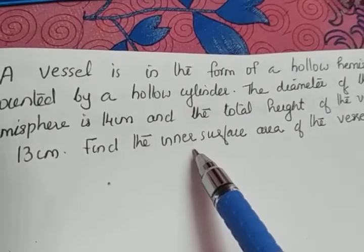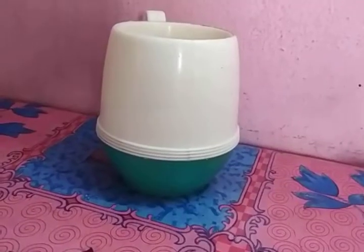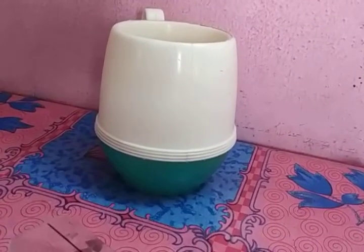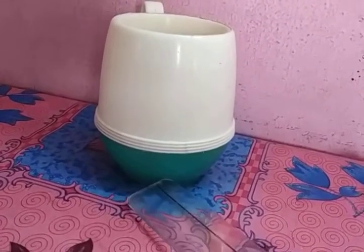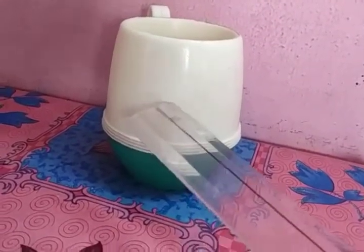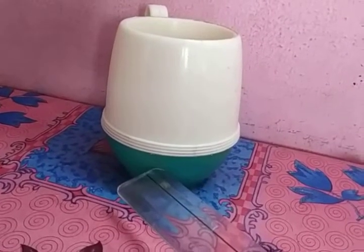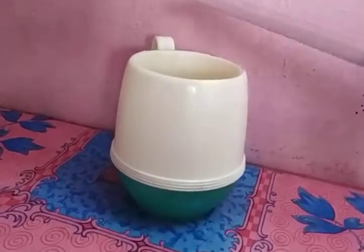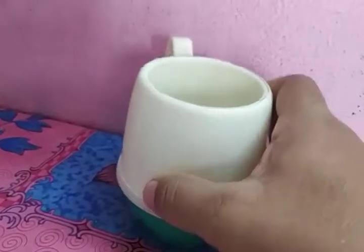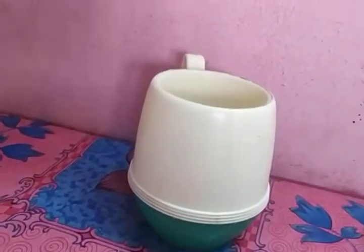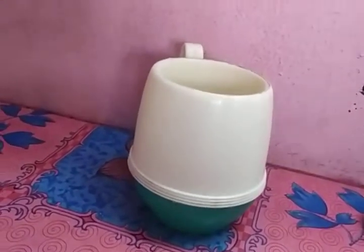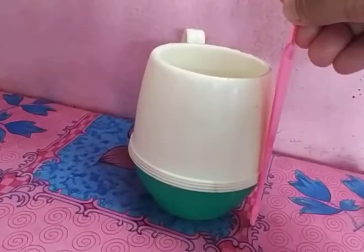We have to find the inner surface area of the vessel. The vessel is in the form of a hollow hemisphere — the green colored portion is the hemisphere and the white portion is the cylinder. The diameter of the hemisphere is given as 14 cm — you can see a circle at the top. The total height of the vessel, meaning the full length, is given as 13 cm.